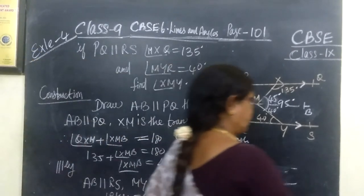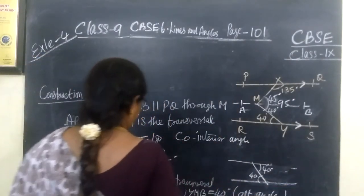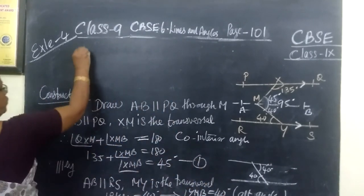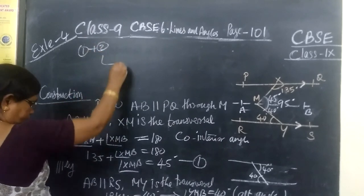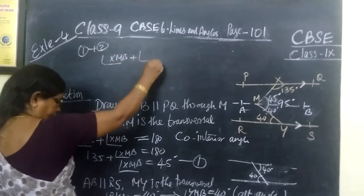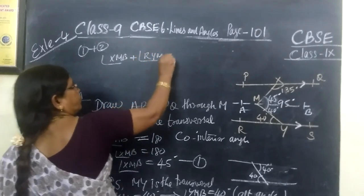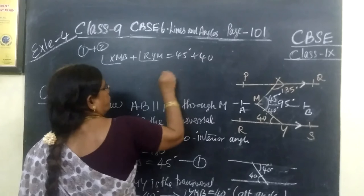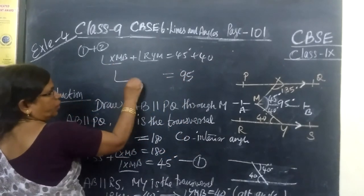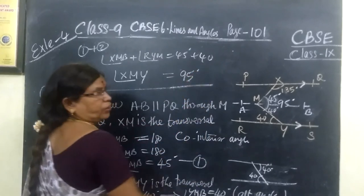Now add those two, you get the answer 95. Therefore, from 1 and 2, add these angles: XMB plus angle RYM equal to 45 plus 40 equal to 95. So if you add XMB and RYM, you get the full angle XMY. So this answer only we want to find.